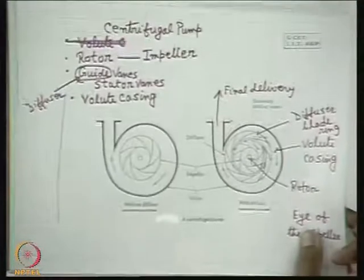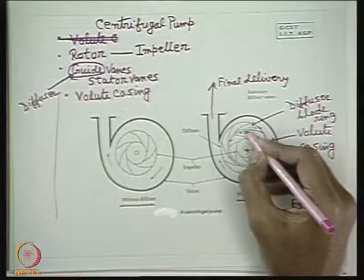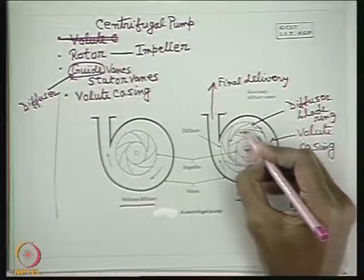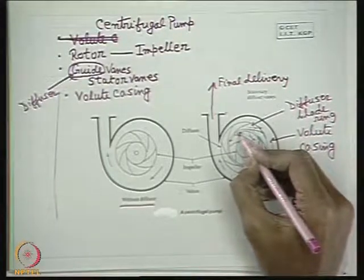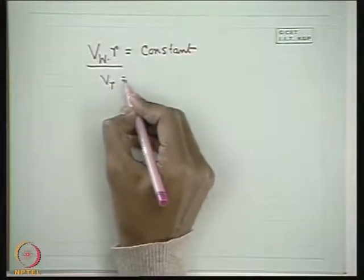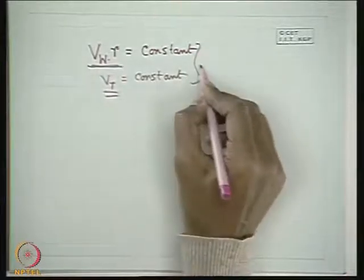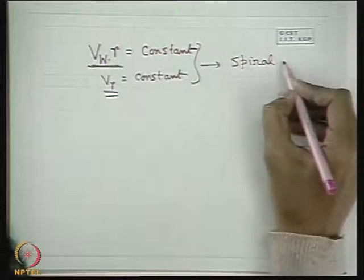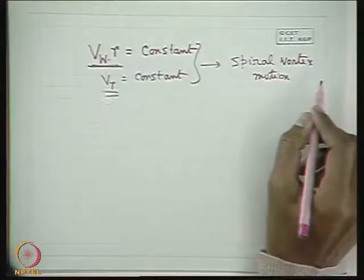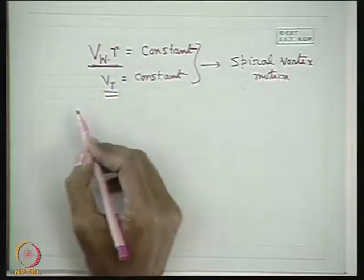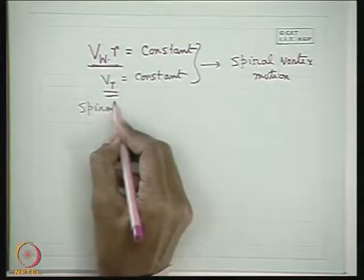If we consider the fluid to be ideal and disregard frictional effects, the flow velocities at the impeller outlet are uniform, so the radial velocity can also be considered constant. A combination of a uniform radial velocity and a free vortex motion gives rise to a spiral vortex motion, for which the streamlines are spiral in shape — producing a pattern of spiral streamlines.